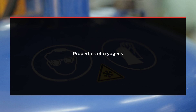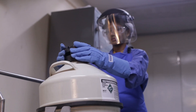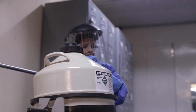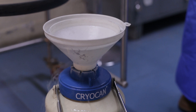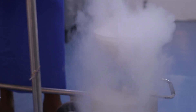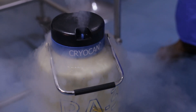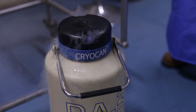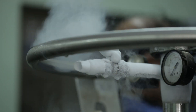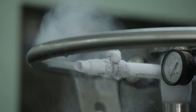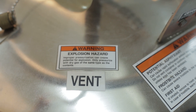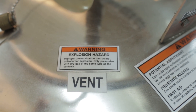Properties of cryogens: cryogens have very low boiling points. Liquid nitrogen boils at minus 196 degrees Celsius, whereas liquid helium boils at minus 268 degrees Celsius. Cryogens have high expansion ratios — liquid nitrogen expands to 696 times while changing to gaseous phase, and liquid helium expands to 757 times. This in turn can cause pressure buildup in a sealed container.